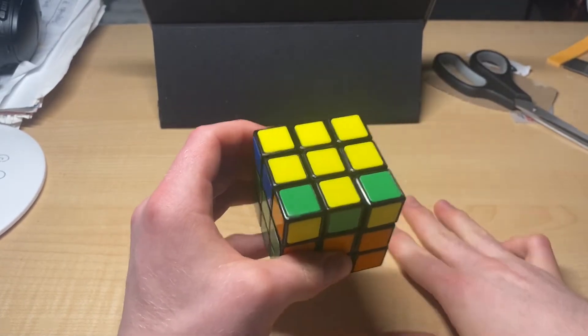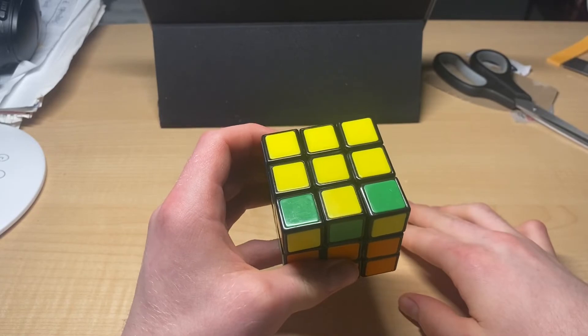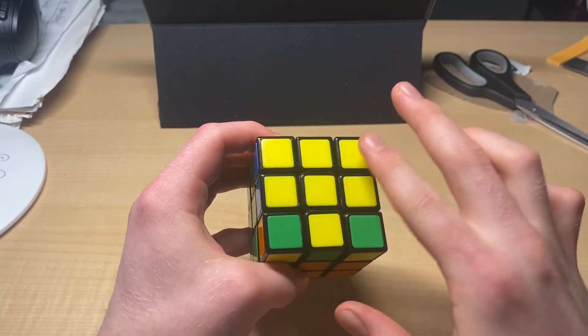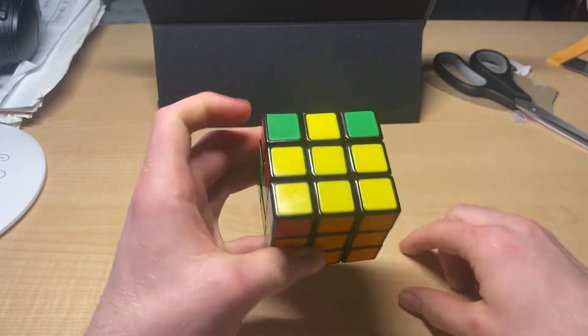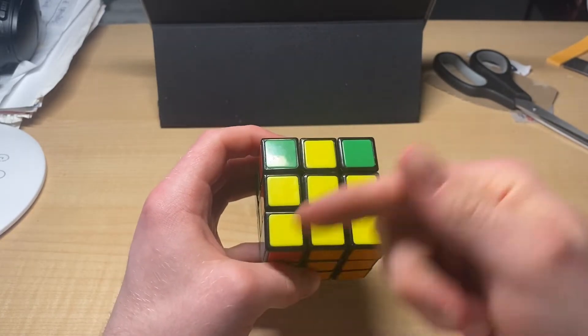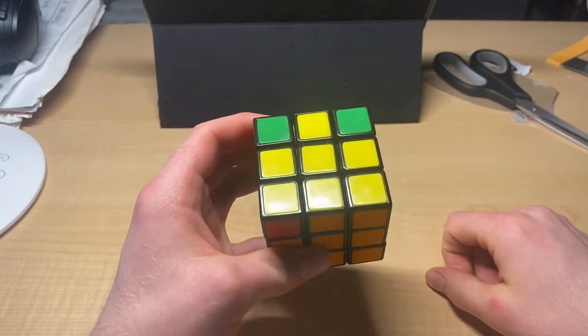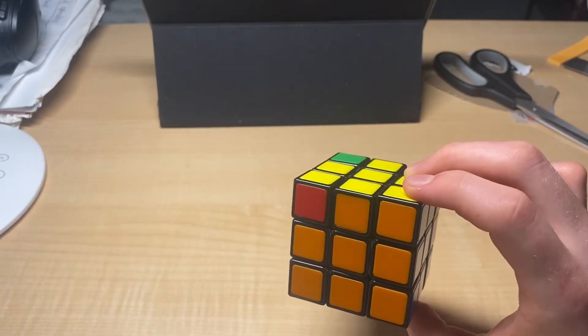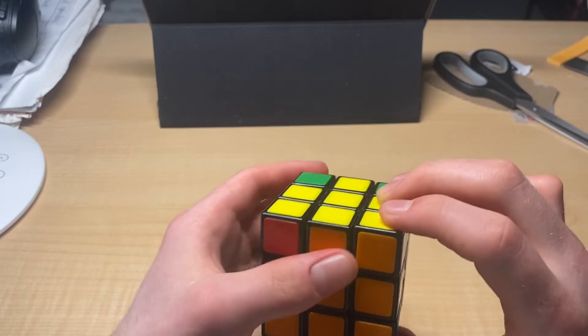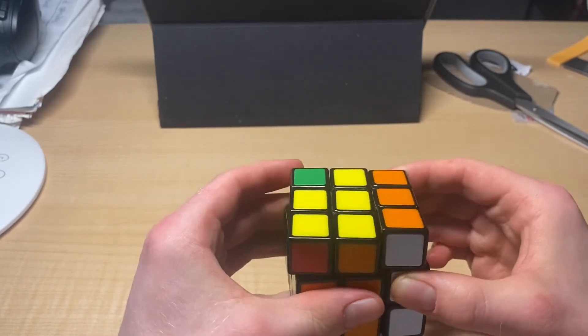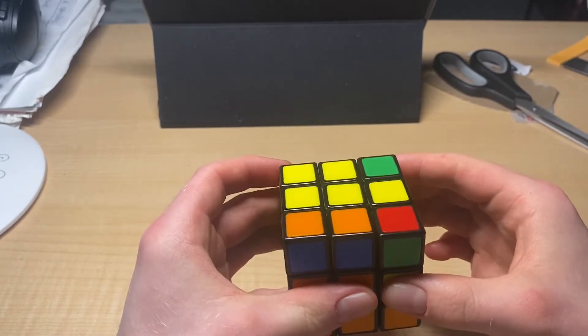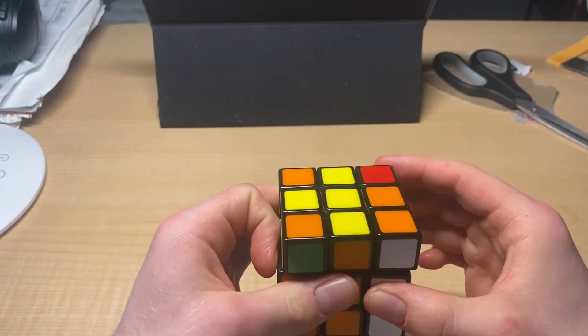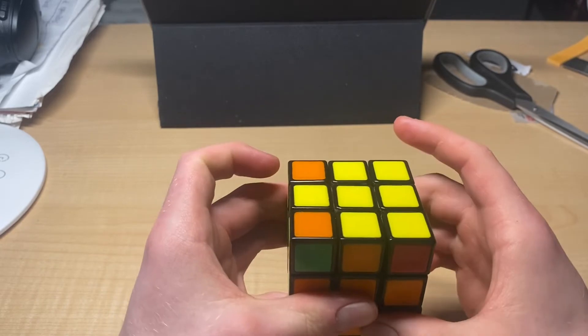I guess you could say it's a fish kind of here, right? And you can bring this here to bring it facing the bottom left-hand corner. And then you can just do your fish algorithm, which is R, U, R prime, U, R prime, U2, and R prime.